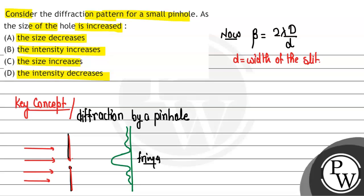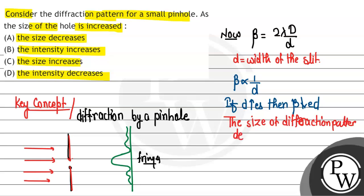So if d is the width of the slit, now beta is inversely proportional to d. So if d increases, then what happens with beta? Beta will decrease. So the size of the pattern, the diffraction pattern, will decrease. The size of the diffraction pattern decreases.